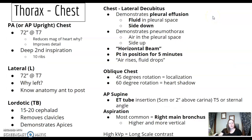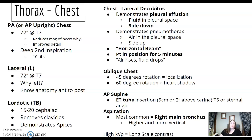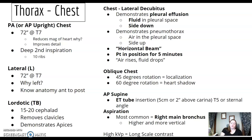For chest x-ray, you know your central rays, you know double inspiration, but do you remember why? Do you remember how to evaluate rotation on a PA chest? Do you remember why we do 72 inches for chest x-ray? Why do we do left lateral for chest x-ray? Do you know your anatomy anterior to posterior on a lateral chest? When do we do lordotic chest?